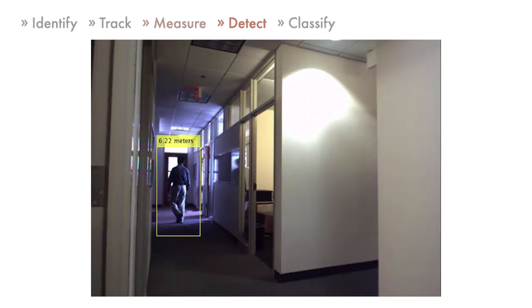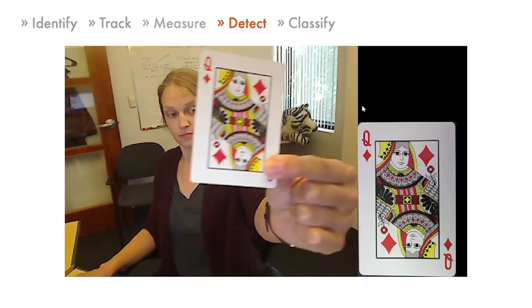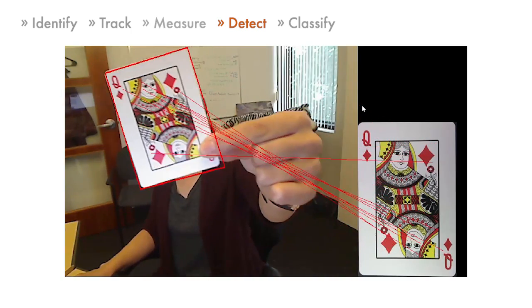Feature detection, extraction, and matching allows you to find an object in a cluttered scene. Here, I'm able to detect and follow the object around, even if it changes size or orientation.